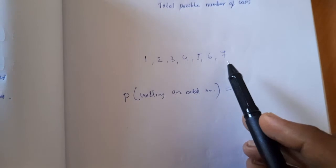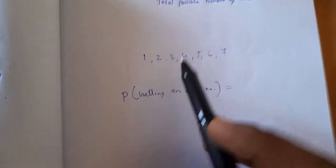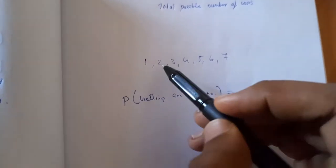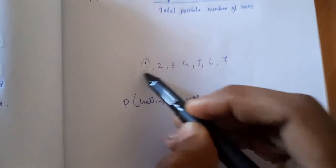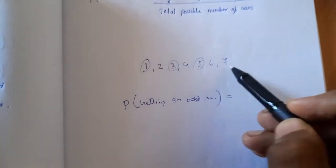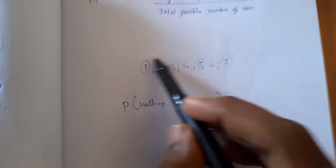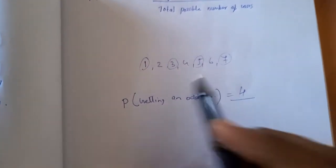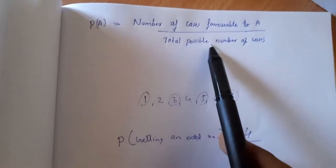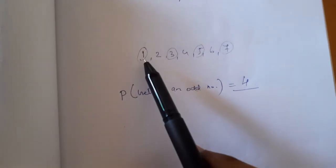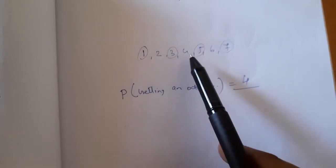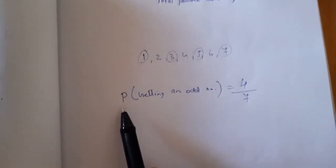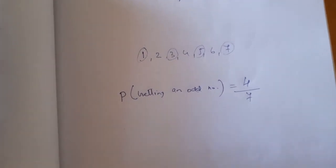The total number of cases is 7. The odd numbers are 4 favorable cases. So the probability of getting an odd number is 4 divided by 7.